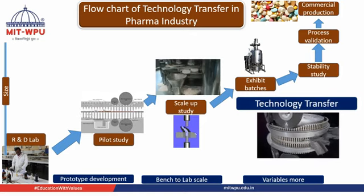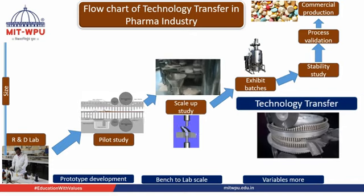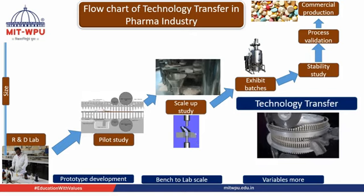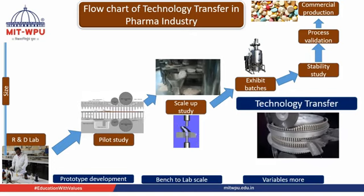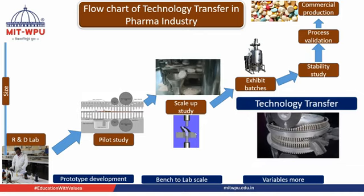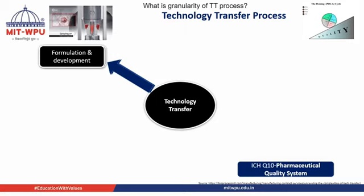That is nothing but technology transfer — doing the scale-up, exhibit batches, along with all professional expertise and skills that have to be transferred to the commercial level. Once you are satisfied with the viable formula and it has certain innovation and certain benefit, then we can think about commercial production. Because many times, R&D labs don't have the facility to manufacture at commercial level, so they have to think about the organization's manufacturing site where this facility is available. We have to always bring the formula from bench to lab scale by considering all variables.